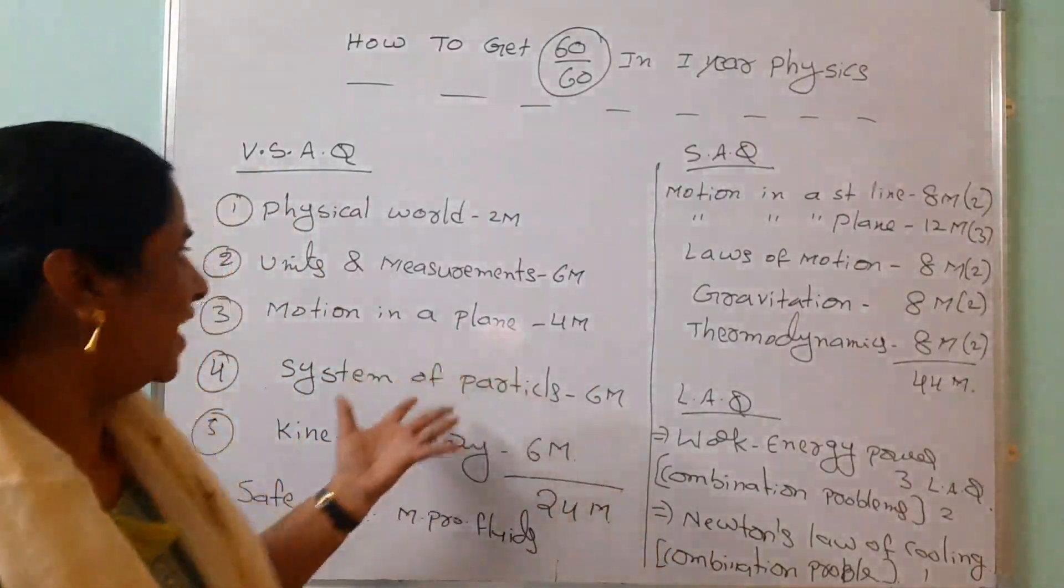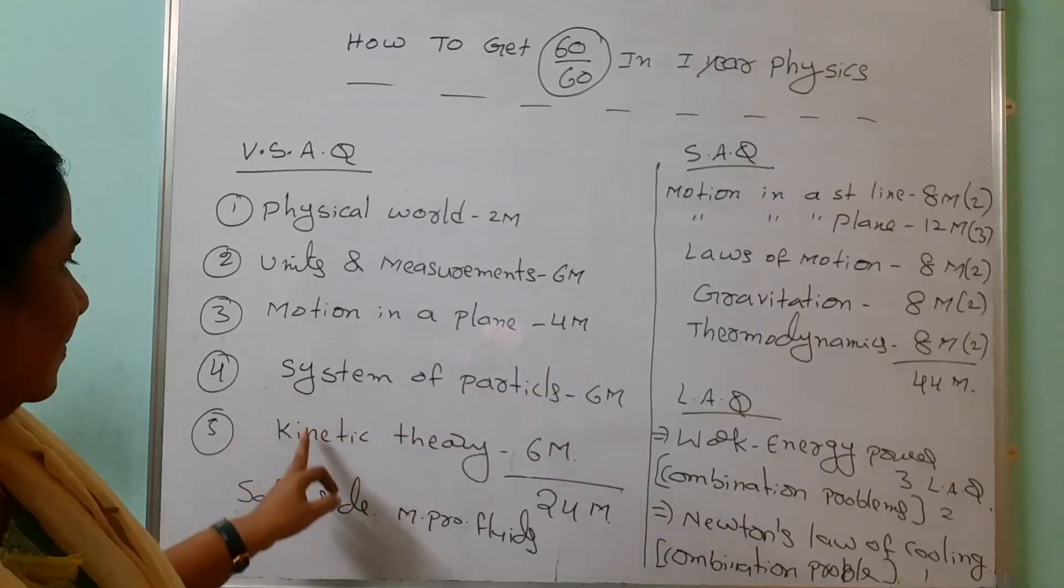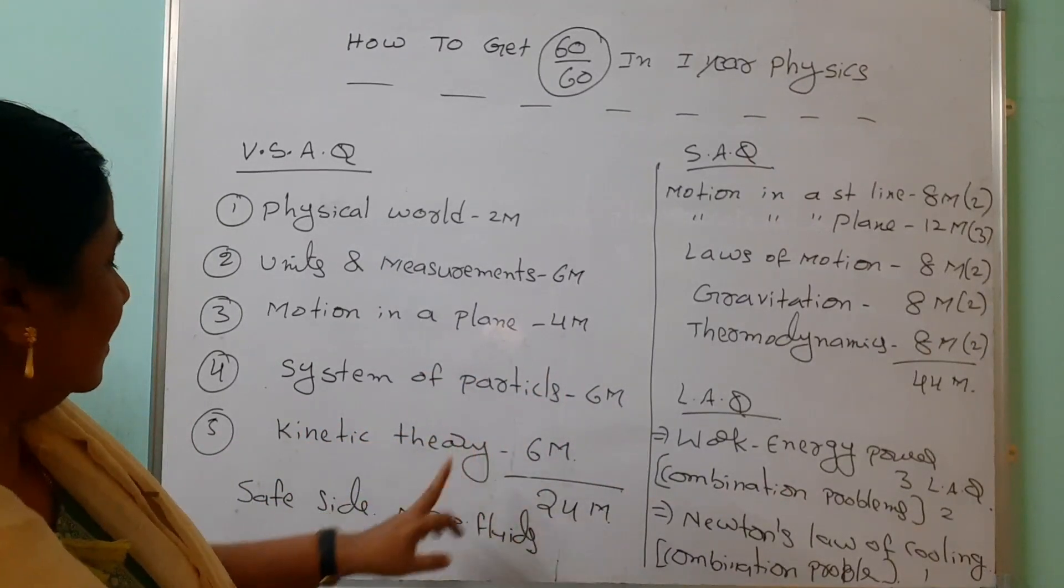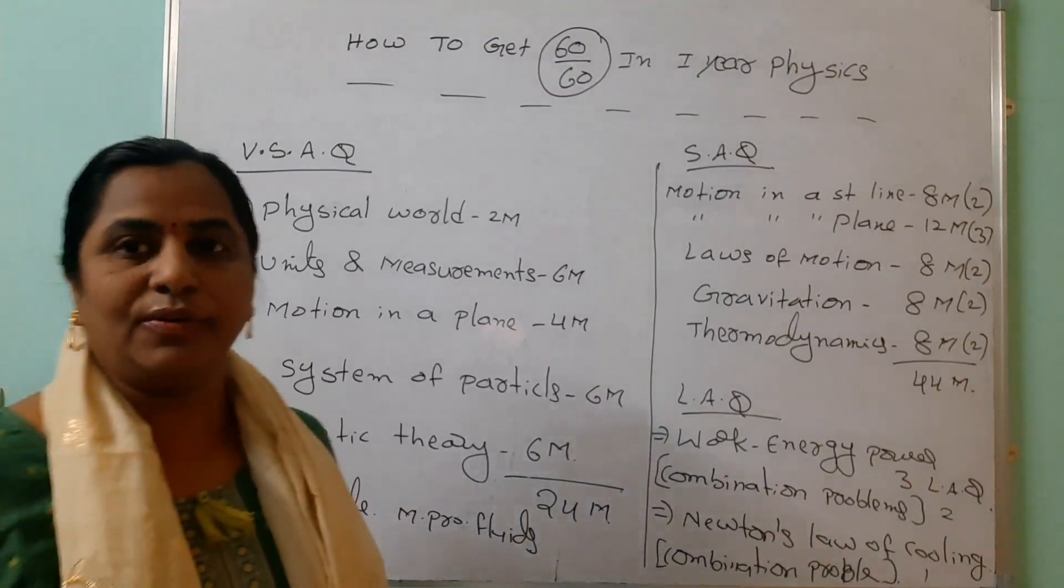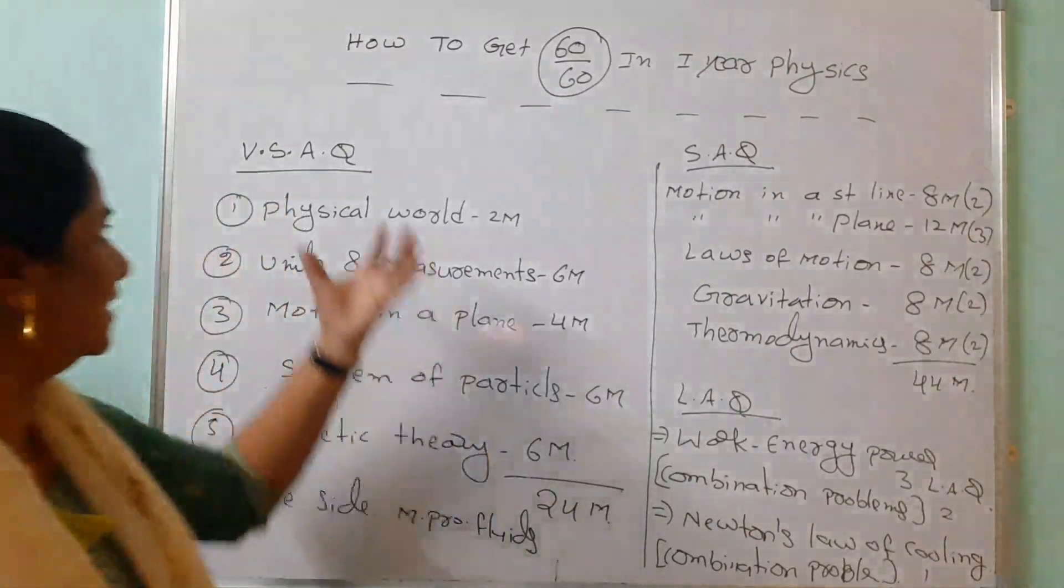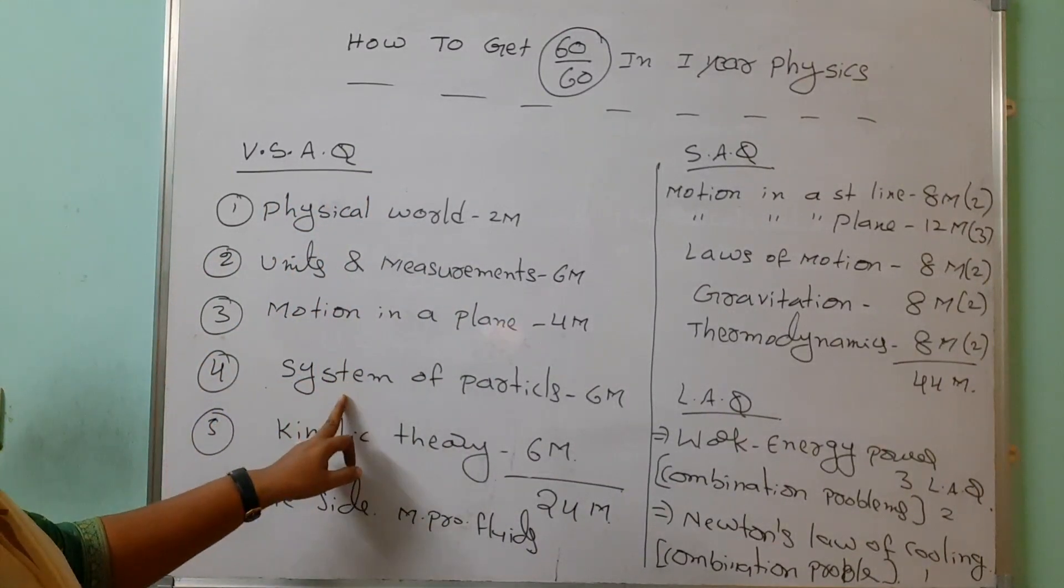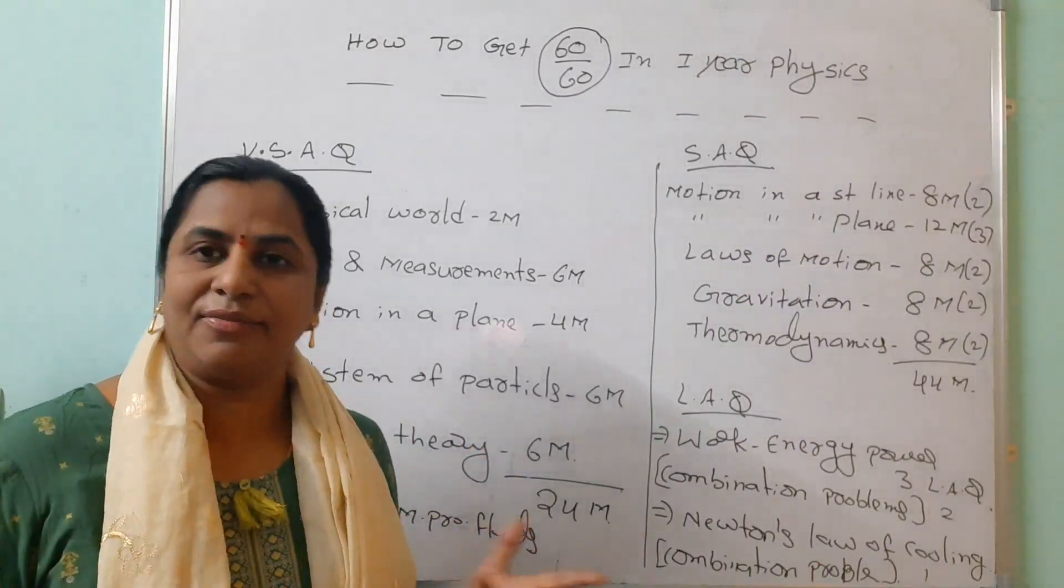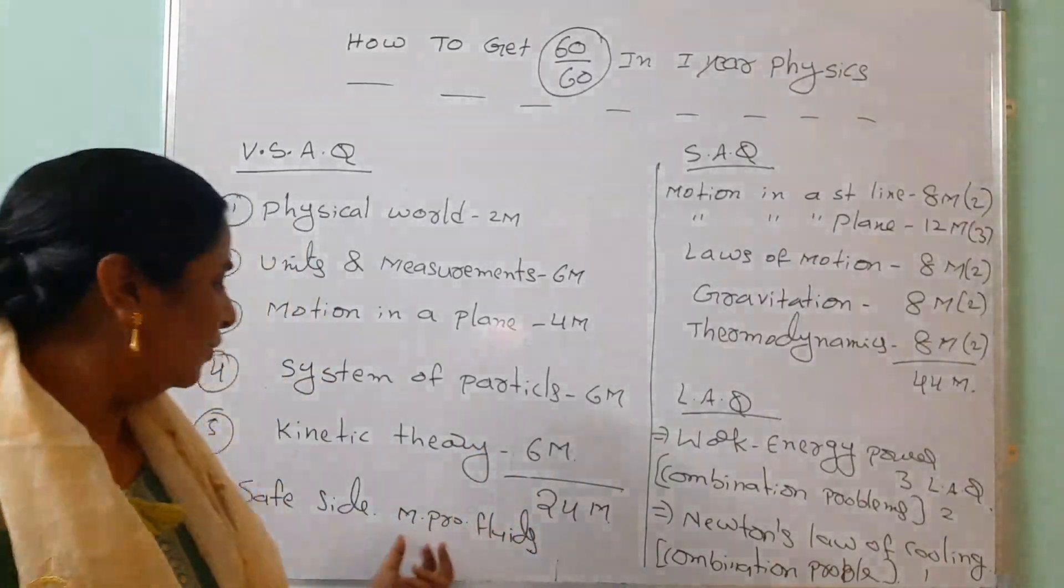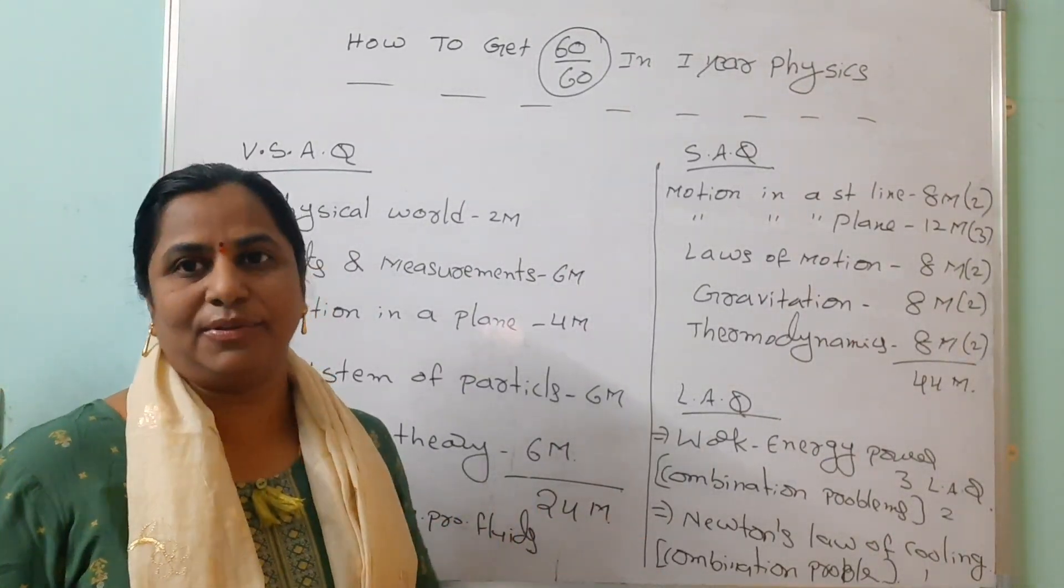Safe side, you should learn motion in a plane chapter, then kinetic theory. Safe side, you should read motion, mechanical properties of fluids. So if you are reading these chapters - VSAQs: physical world, units and measurements, motion in a plane, system of particles, kinetic theory - you can able to write the twenty marks. If you are having sufficient time, go through the mechanical properties of fluids also, then definitely you can able to give the twenty marks.